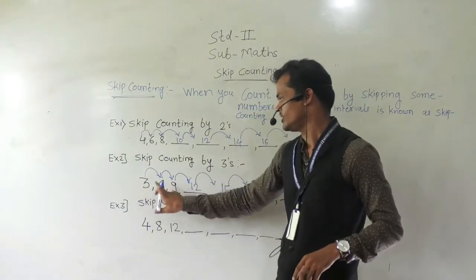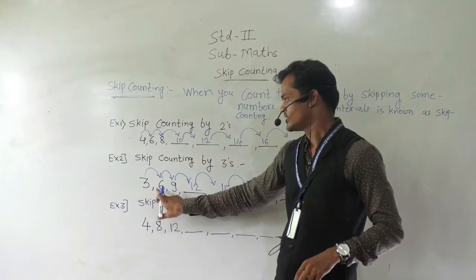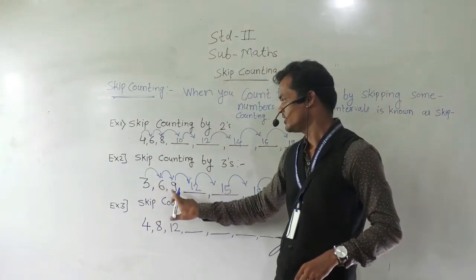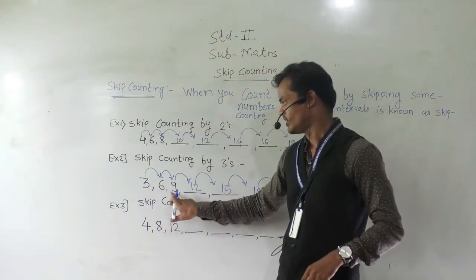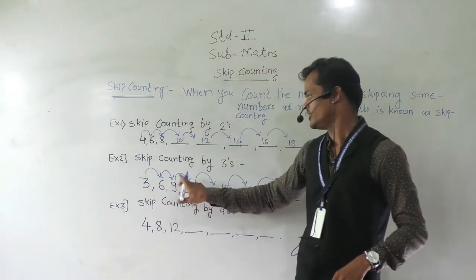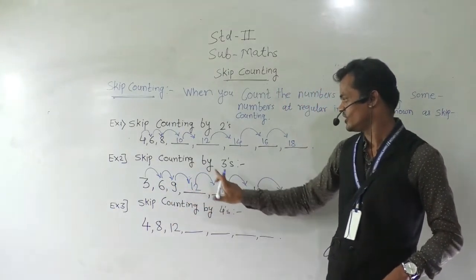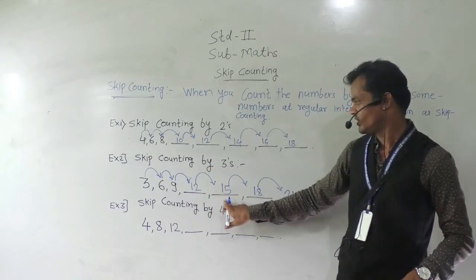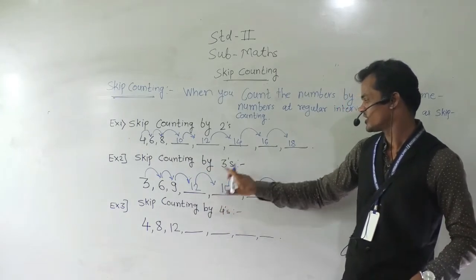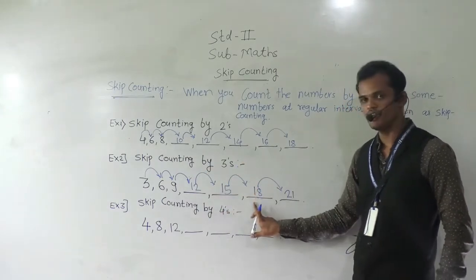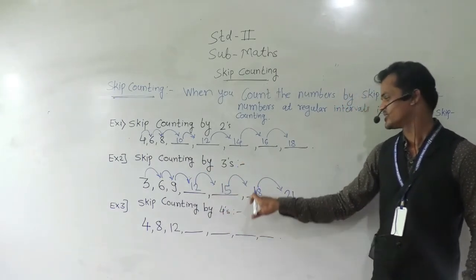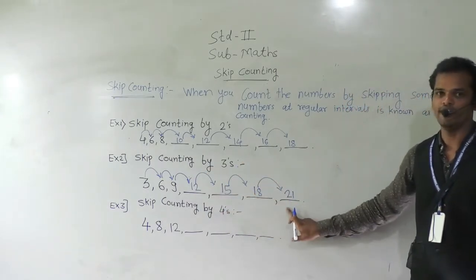3 plus 3 is 6. 6 plus 3 is 9. 9 plus 3 is 12. 12 plus 3 is 15. 15 plus 3 is 18. And 18 plus 3 is 21. Every time we have skipped 3.